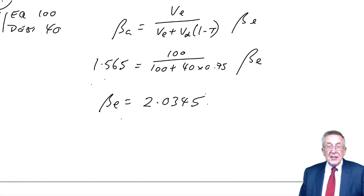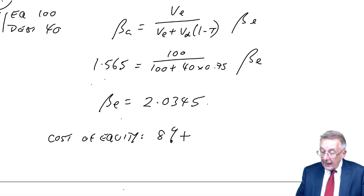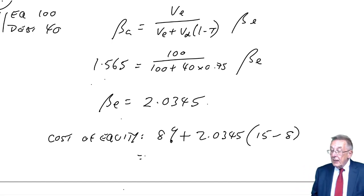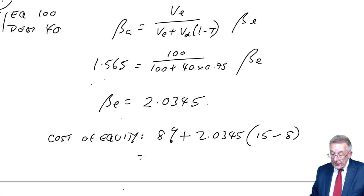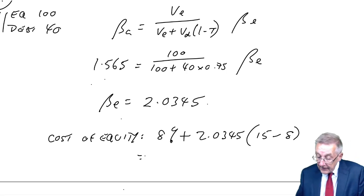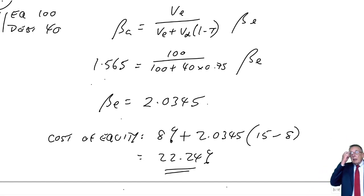The gearing, equity is 100 over 100 plus 40 times 1 minus T times equity beta. And so, the equity beta multiply, divide, we get an equity beta of 1.565 times 140 divided by 100 of 2.0345. So, that's the beta for the shareholder's money being invested in this project, this company, with this level of gearing. And so, what cost of equity is required? The normal capital asset formula, the risk-free rate, 8% plus beta times the market premium, 15 minus 8. And so, the return required by shareholders' money in this project, in this company, is 7 times 2.0345 plus 8. 22.24%.